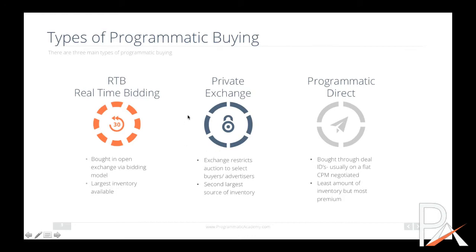Next, we have the private exchange. This is essentially an exchange or network that restricts who is allowed to buy on it. The way to get access is to basically negotiate — and then through the SSP and DSP connection, the person that deals with the exchange allows your buyer ID number access to buy from that exchange. Usually there's some sort of floor CPM to start bidding on there.